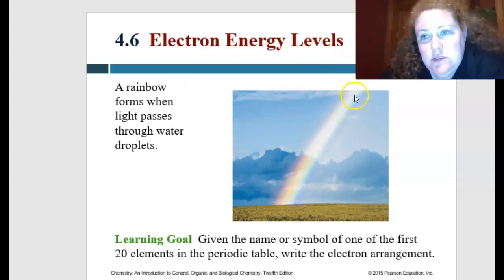I love rainbows. I absolutely adore rainbows. But a rainbow forms when light passes through water droplets, and it basically splits out the visible energy. The learning goal for this one is given the name or symbol of one of the first 20 elements of the periodic table, write out the electron arrangements.